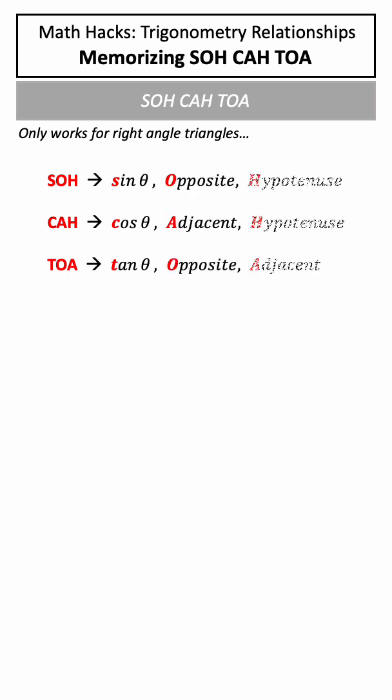So what do these acronyms stand for? Well, the first letter refers to the trigonometric function sine, cosine, or tangent, and the second and third letters refer to the two side lengths that will make up our equation: opposite, adjacent, and hypotenuse.